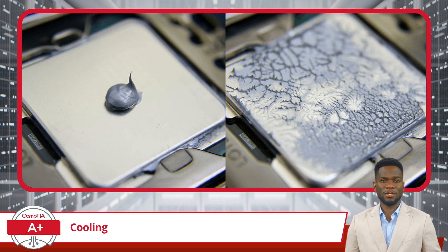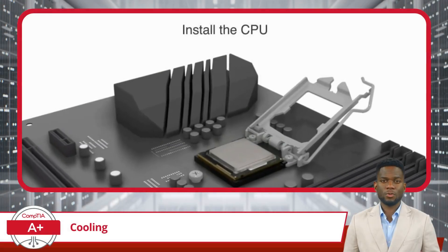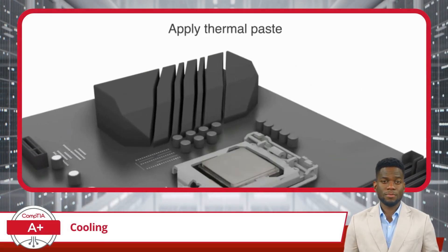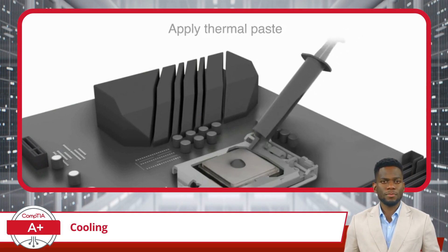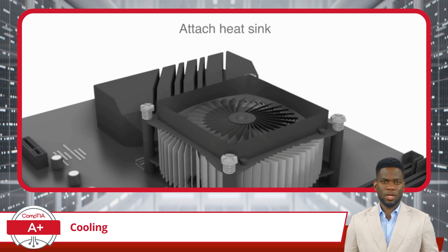Let's take a look at how to install a CPU properly and then replace the thermal paste once it gets old. First, we need to install the CPU in its socket. Then we apply the thermal paste — not too much. After that, it is time to attach the CPU heatsink.